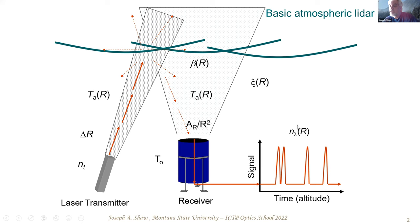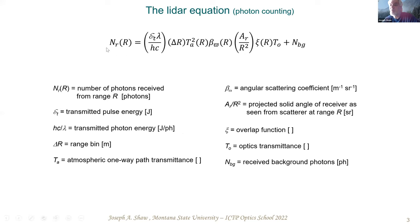That produces a photon count as a function of range. The number of photons received from range R equals the laser pulse energy divided by the photon energy — giving the number of transmitted photons — multiplied by all the usual terms. The only extra piece is that we always have a background signal, which is scattered sunlight from the same particles in the atmosphere. That's the photon counting version of what we call the LIDAR equation.